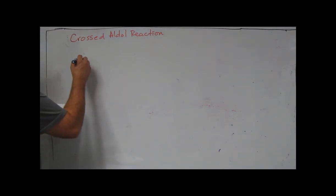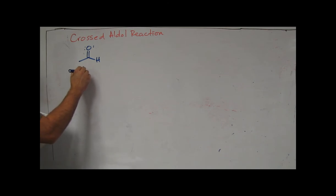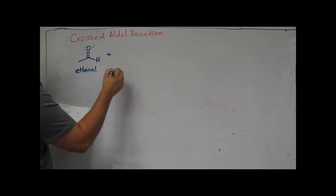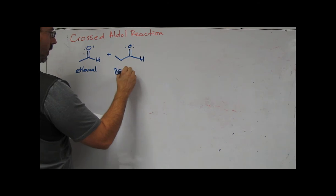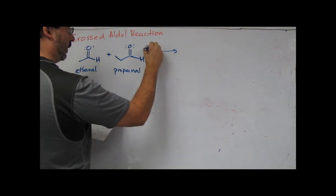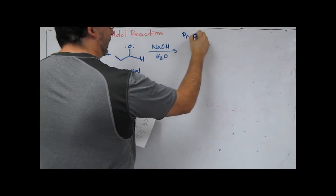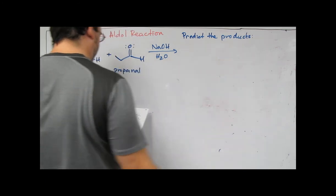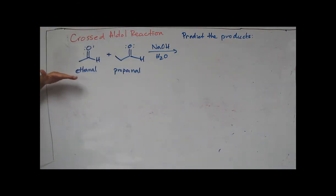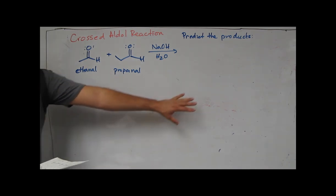So let's start with ethanal, and we're going to react that with propanal under basic conditions. What we want to do is predict the products. To do that, let's take a logical approach: we'll identify the electrophile in column one, the enolate in column two, and then draw the products to the right.